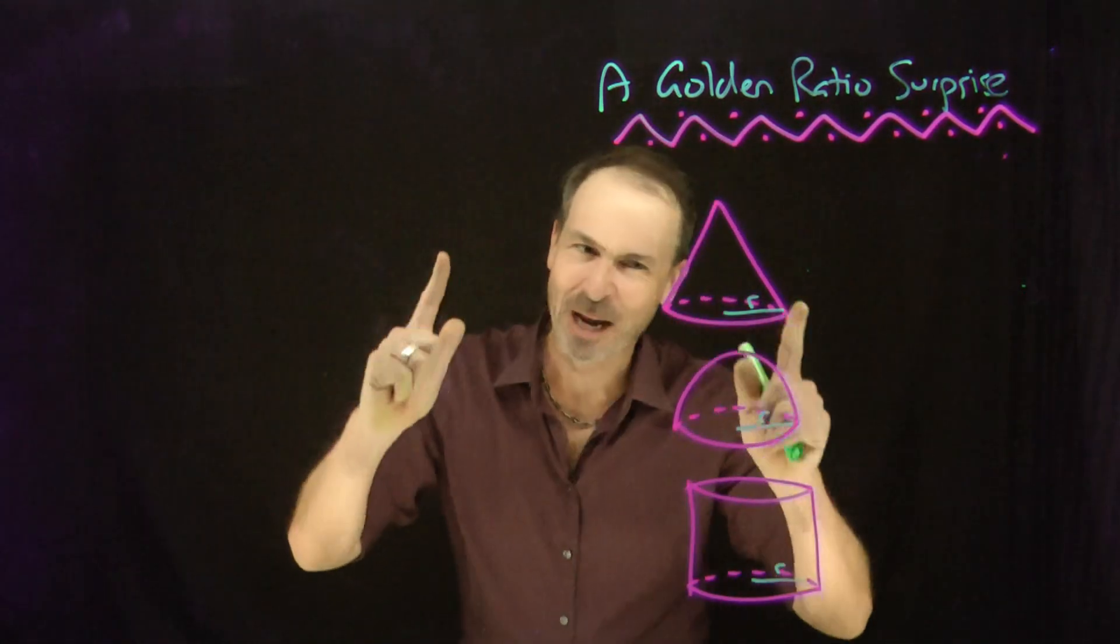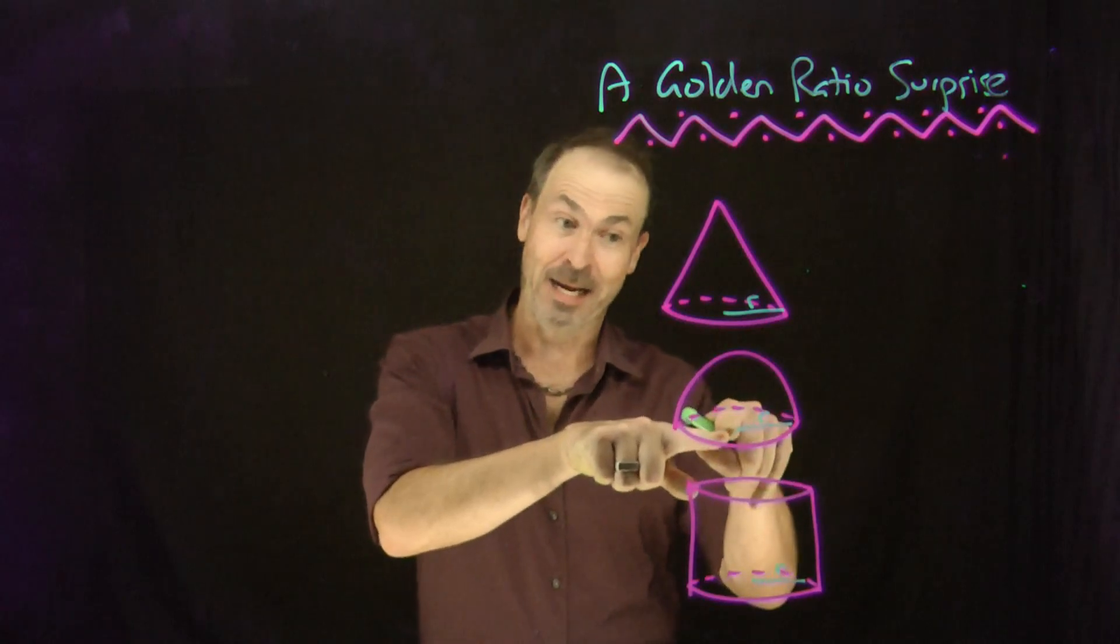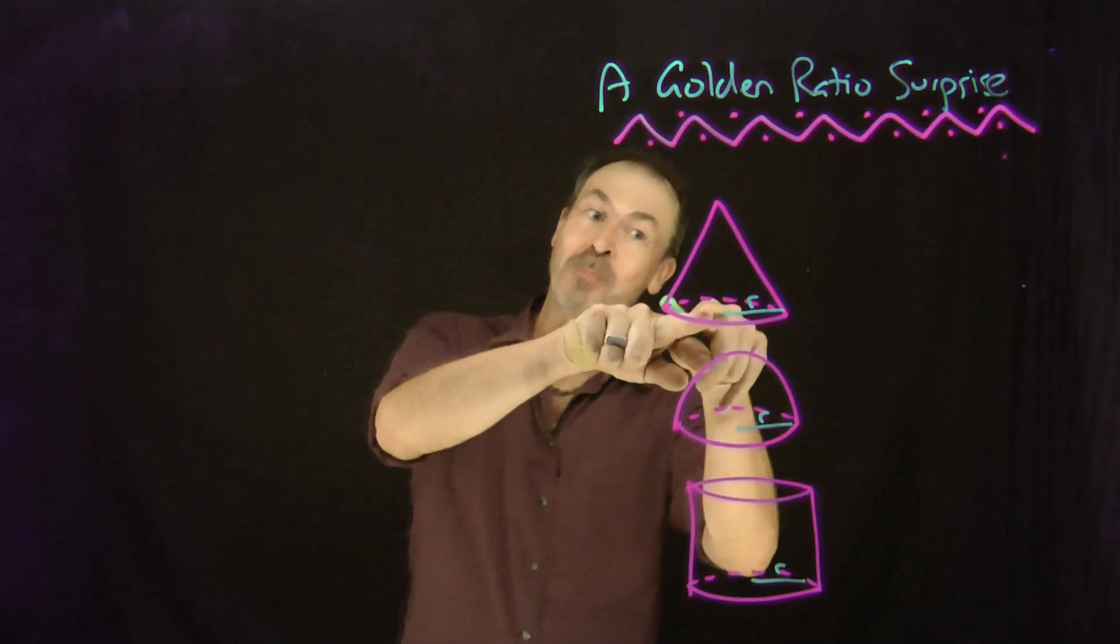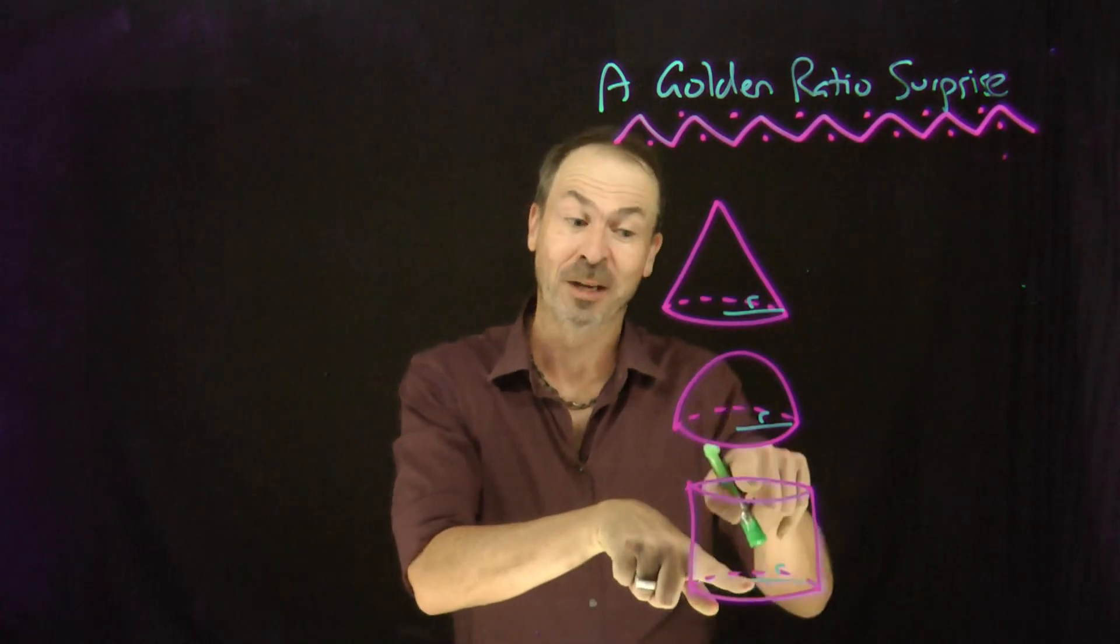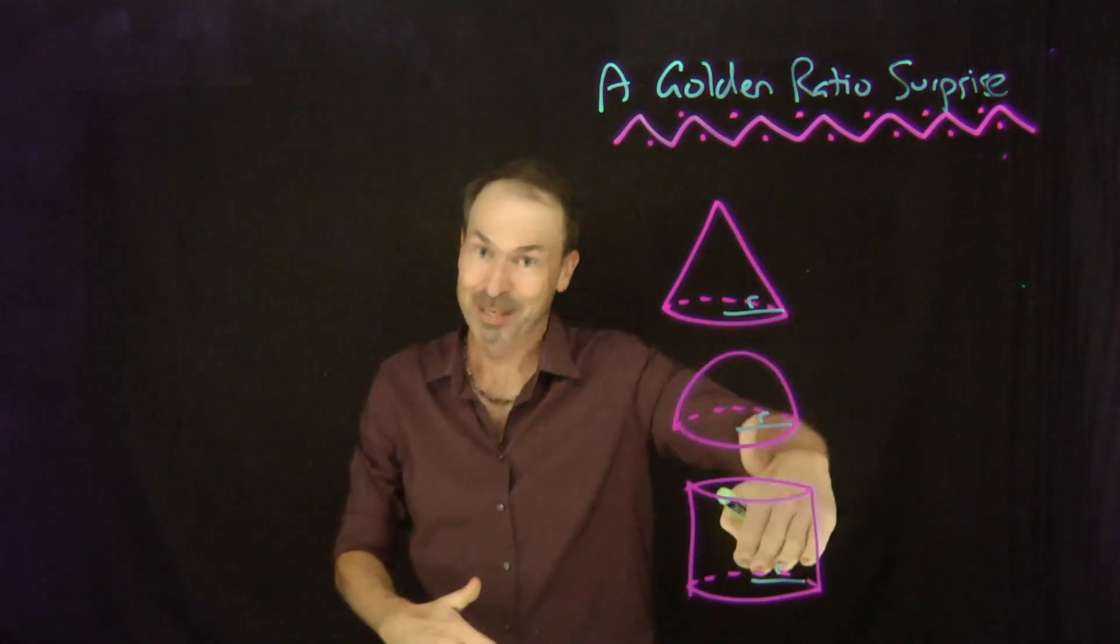It's actually more striking if you imagine having a hemisphere with radius r and height r, and a cone with base radius r, also height r, and a cylinder with base radius r and also height r. Keep all the r's the same, height the same as r.